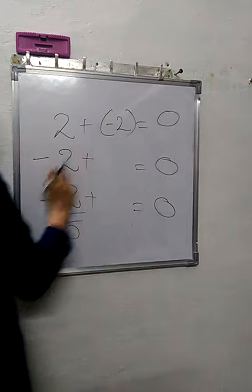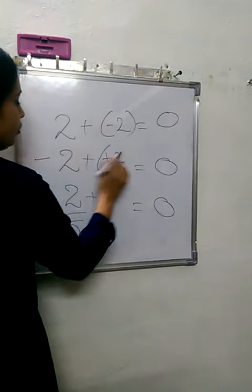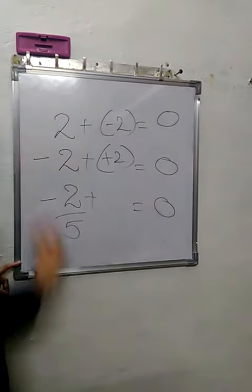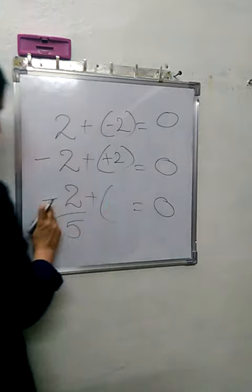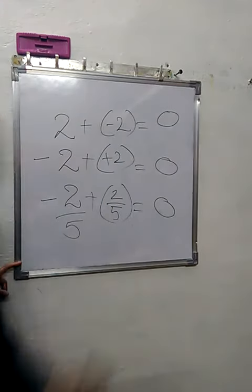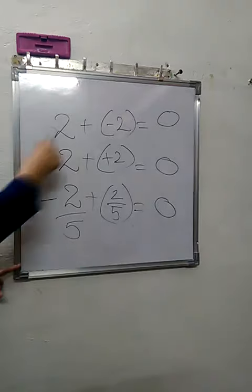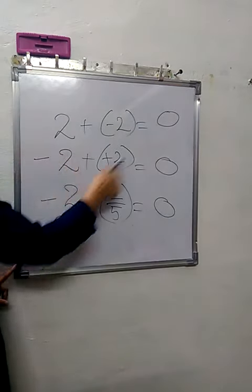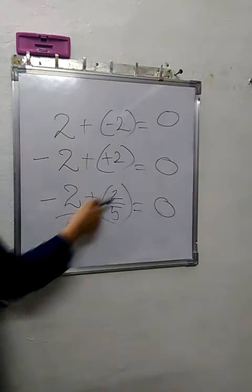Minus 2. This is minus 2, so plus 2 means only 2, and this is already minus, so this is positive 2 minus 2 equals 0, minus 2 plus 2 equals 0, minus 2 by 5 plus 2 by 5...